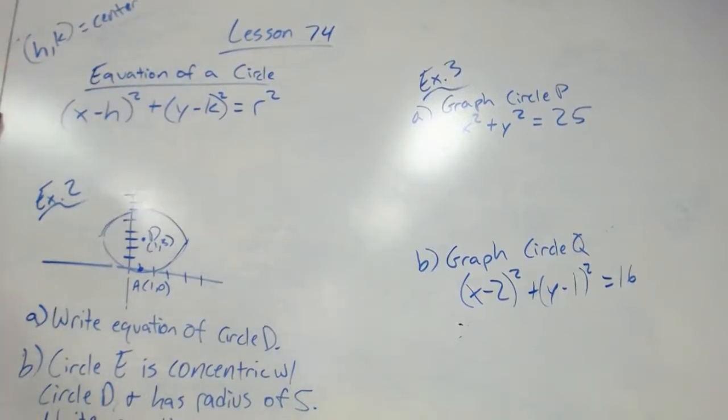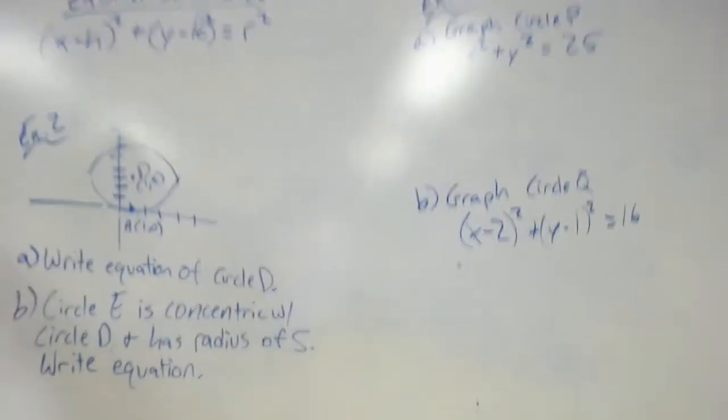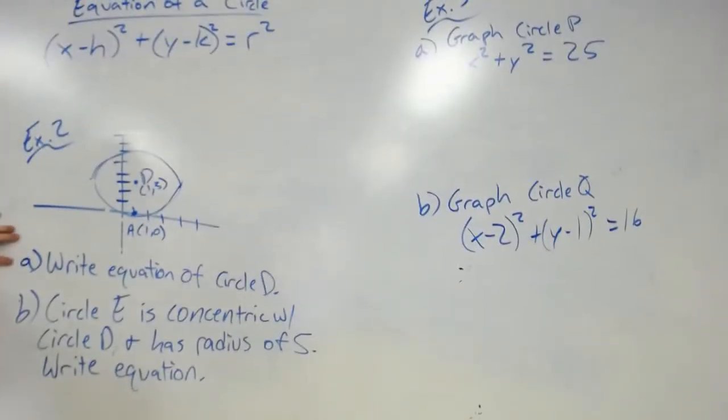Let's look at example two now. Part a says write the equation of circle D. We've got our equation here. x and y are always going to just stay as x and y, just like the y = mx + b formula. Let's first look for our center of the circle.